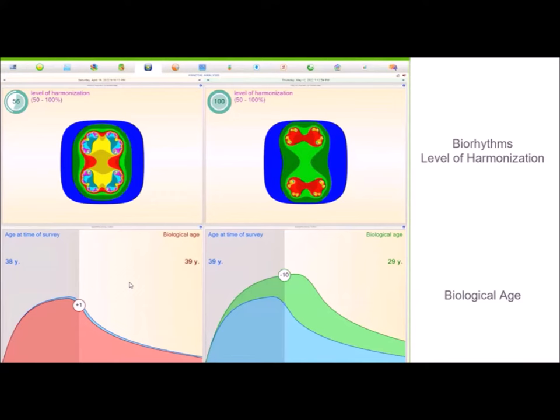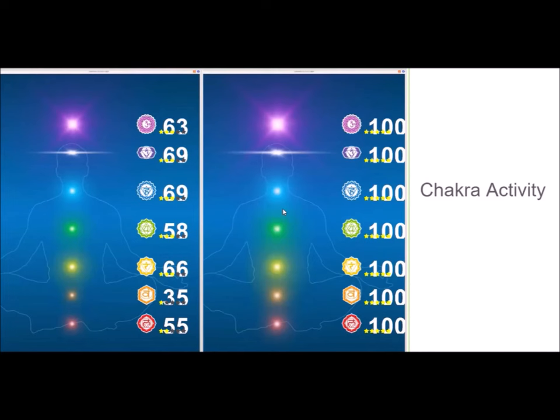Now let's look at chakra activity. These are energy centers in the body, and one of the energy centers, called the crown chakra at the very top, actually extends beyond our body past our head. As you can see, his chakras were all below 70. After using the Cloud for one month, he was able to bring them all to 100 percent.